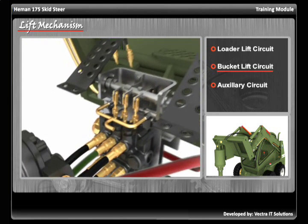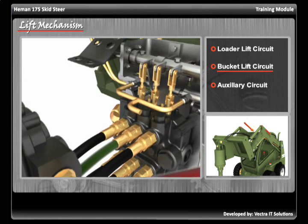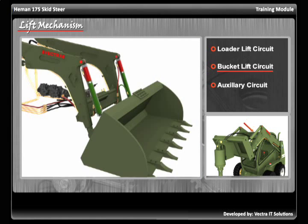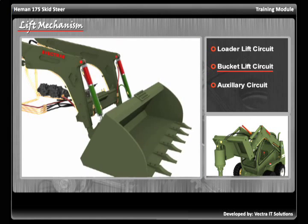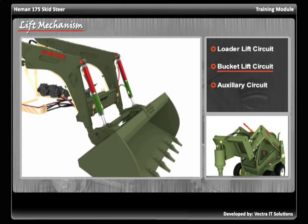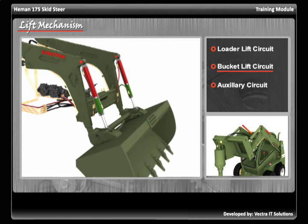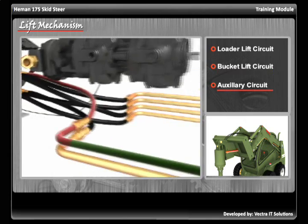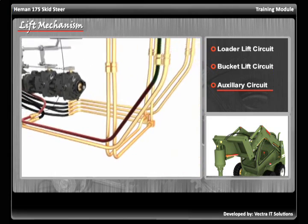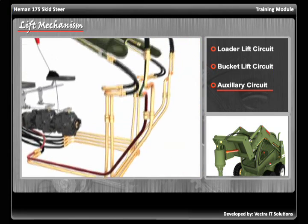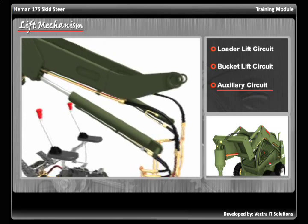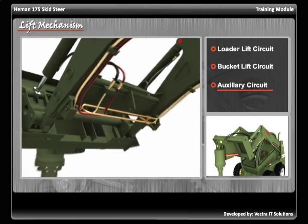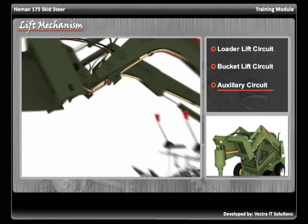The bucket lift circuit is responsible for sending hydraulic oil to the two cylinders of the bucket. The auxiliary lift circuit is responsible for sending hydraulic oil to the motors and cylinders of the optional attachments connected to the Skid-Steer.